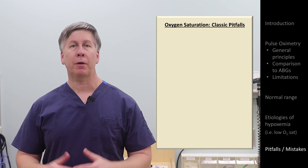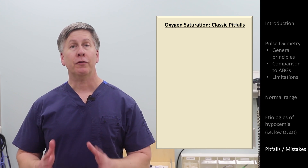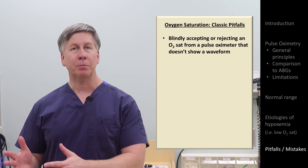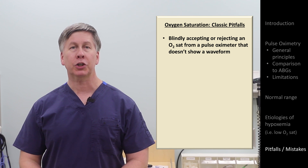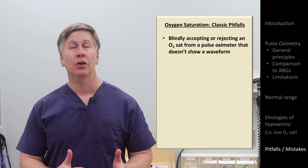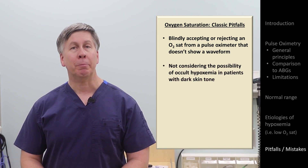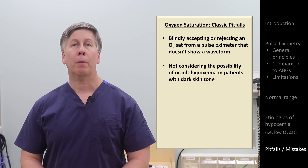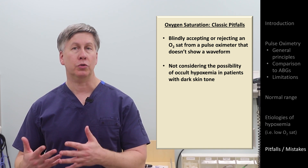I'll end with three common pitfalls and mistakes made with measuring and interpreting O2 sats. First, when using a pulse ox that does not show a waveform, either blindly accepting the measured sat or rejecting it when it doesn't seem to fit the clinical picture, rather than trying to confirm or refute the measurement with a better pulse ox or with an ABG. Second, not considering the possibility of occult hypoxemia in patients with dark skin tone who are presenting with dyspnea and a reassuringly normal or near-normal O2 sat.